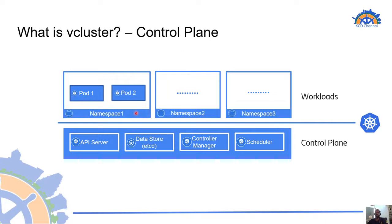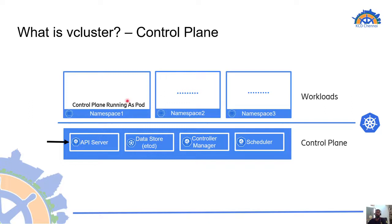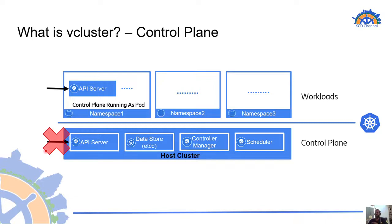For anything, we always talk to the API server which is the gateway to the Kubernetes cluster. In a regular Kubernetes cluster we have the capability to spin up workloads inside namespaces, so why not a control plane inside a namespace? And there comes vcluster, which is designed so that a control plane runs as a pod inside a namespace of the underlying Kubernetes cluster. Going forward we will call this underlying Kubernetes cluster the host cluster. The vcluster's API server becomes the gateway to the virtual cluster, and we will talk to it directly rather than the host cluster's API server.